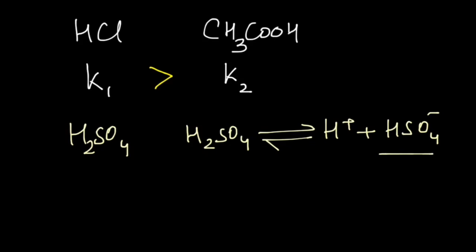Then this HSO4 minus ion will dissociate again and give you H plus and SO4 2 minus. So the dissociation of H2SO4 occurs in two steps.